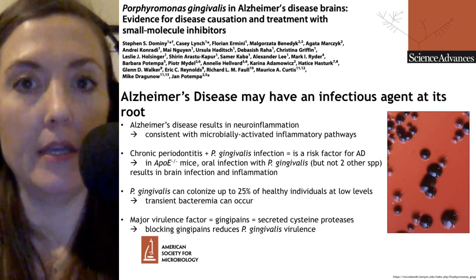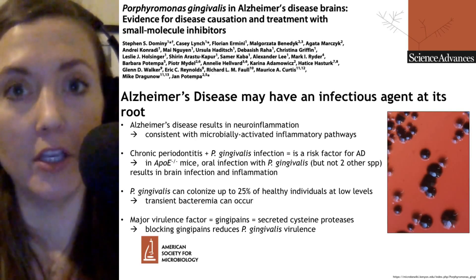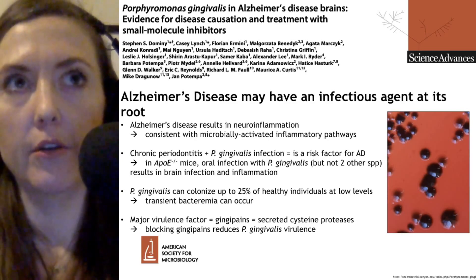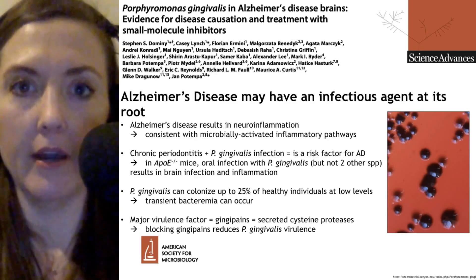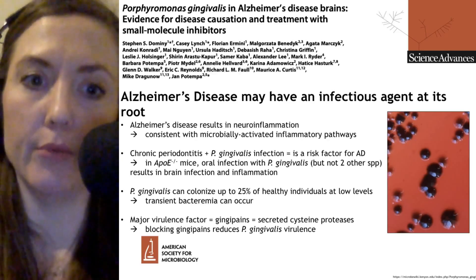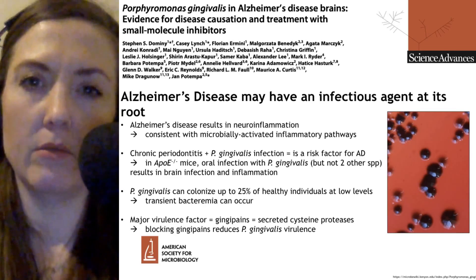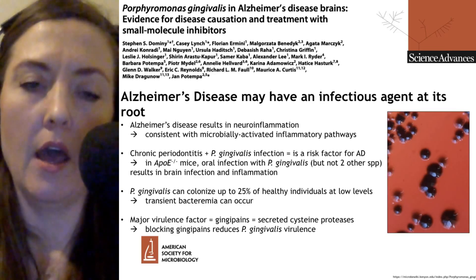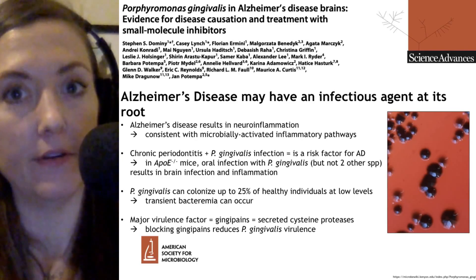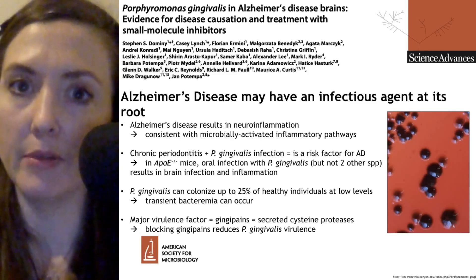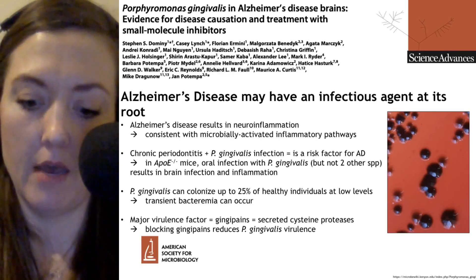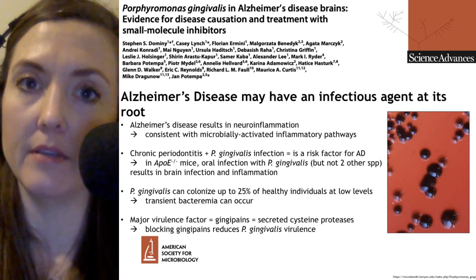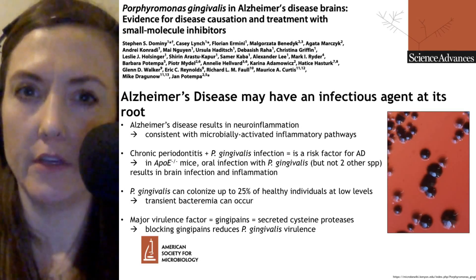This paper begins by discussing the presentation of Alzheimer's disease in the brain. Alzheimer's results in neurodegeneration, in part because of the inflammatory response going on in the brain. This inflammatory response eventually leads to formation of plaques and misforming of certain proteins. But some of the inflammation activation pathways seen — things like the inflammasome, certain complement pathways, and microglia activation — are consistent with microbially activated inflammatory pathways, suggesting that maybe there's an infectious agent at the root.